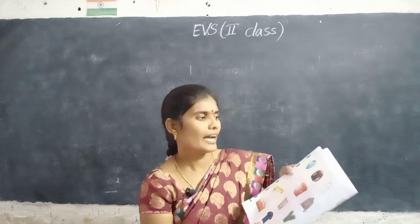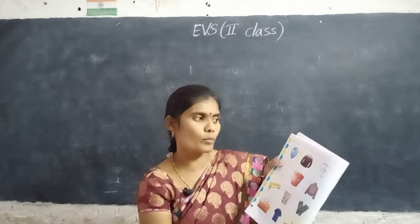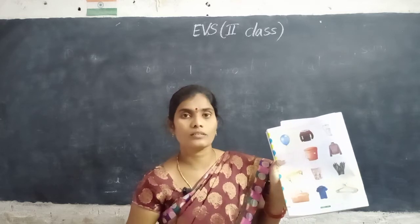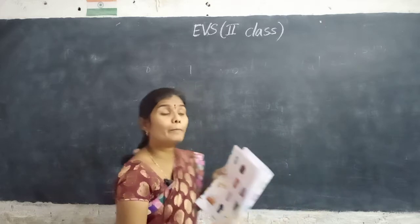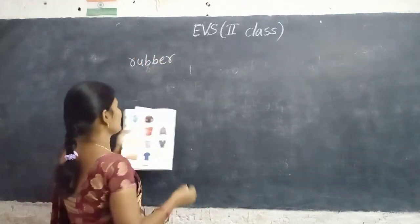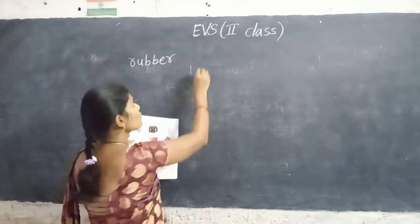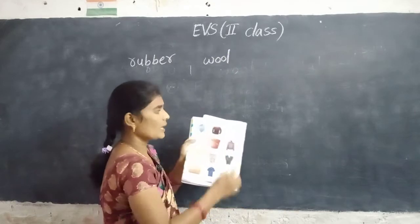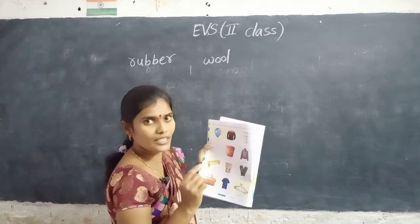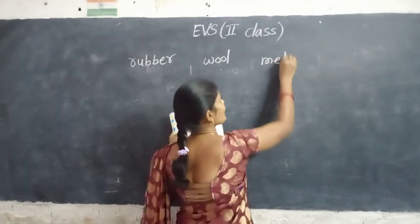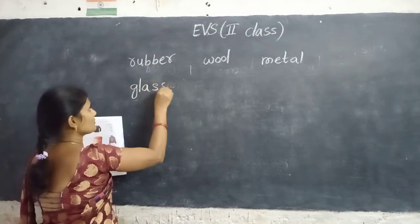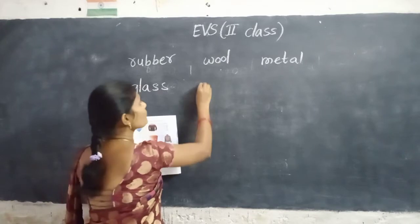Write the names of materials each object is made up of, looking at the picture. First one is balloon — balloon is made up of rubber. Next, sweater is made up of wool. This is a steel jug — it is made up of steel, means metal. Bottle is made up of glass. Bucket is made up of plastic.